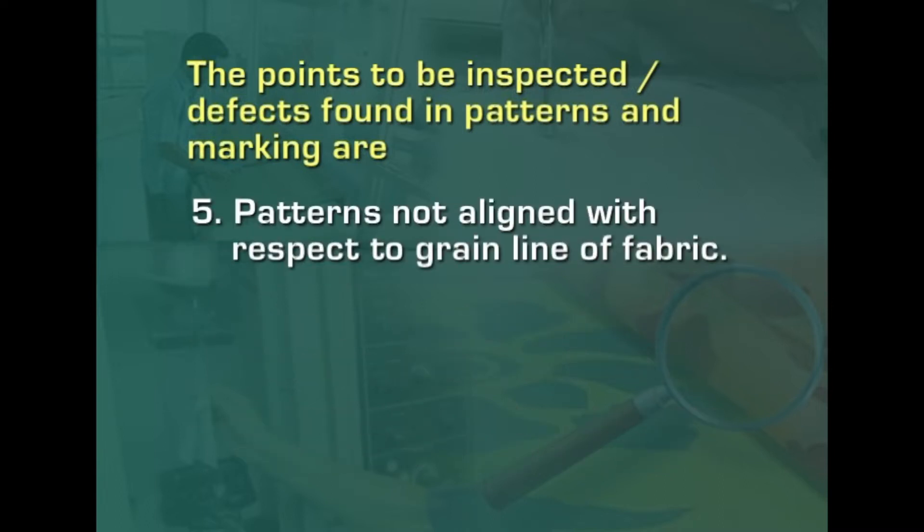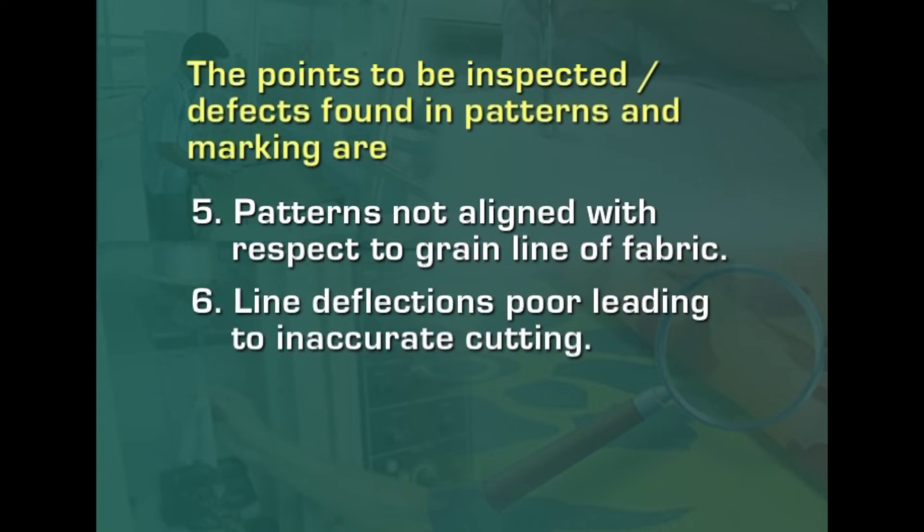Patterns not aligned with respect to the grain line of fabric — as a result, the garment may not drape or fit very well, and line deflections lead to inaccurate cutting. When the line is not good there will be problems, and sometimes printed lines and perforations used to transfer markings from the pattern to the fabric using powders may not be properly made, causing further problems.